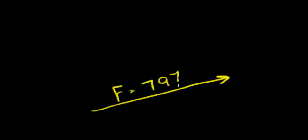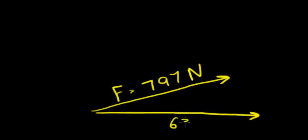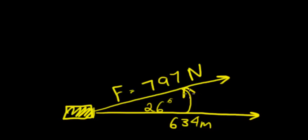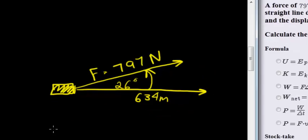So we have our force that is being applied, and that applied force is 797 newtons, and it is displacing it over a displacement of 634 meters, and the angle between these two is 26 degrees. So this is commonly something pulling on something else a longer distance. It doesn't really matter. As long as we have this information, we're able to solve the problem.